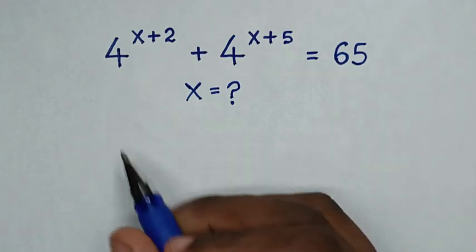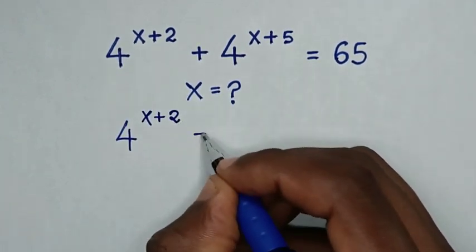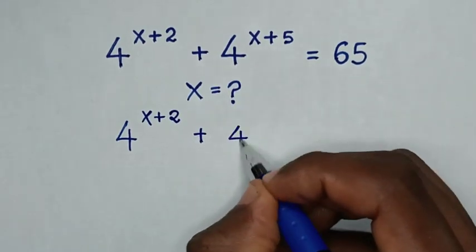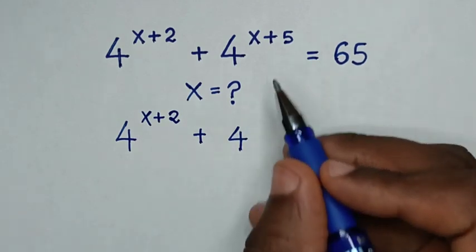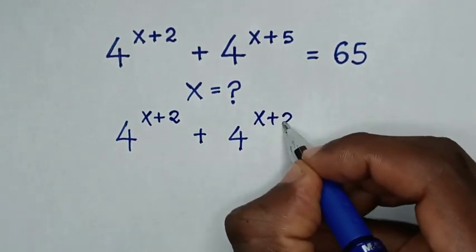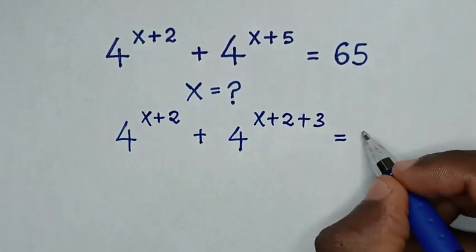So from this equation, which is 4 power of x plus 2, then plus 4 power of x plus 5, to have the same power of x plus 2, this is same as x plus 2 plus 3, is equal to 65.